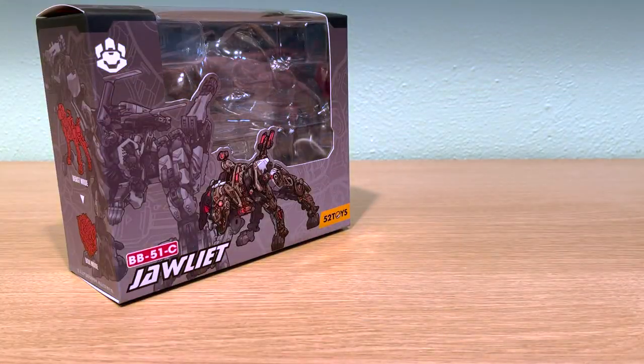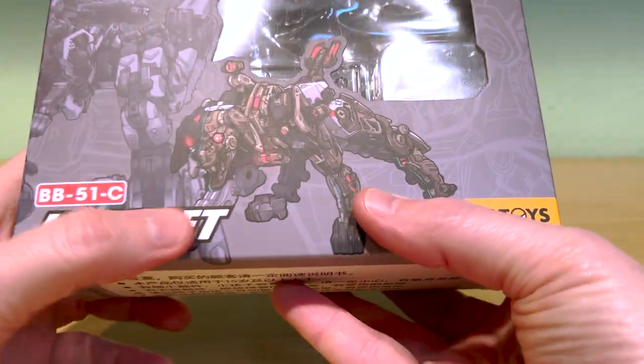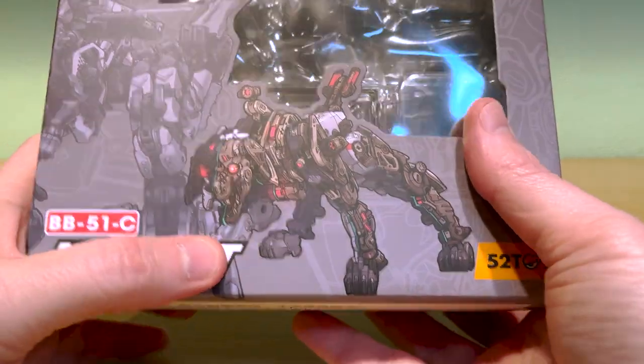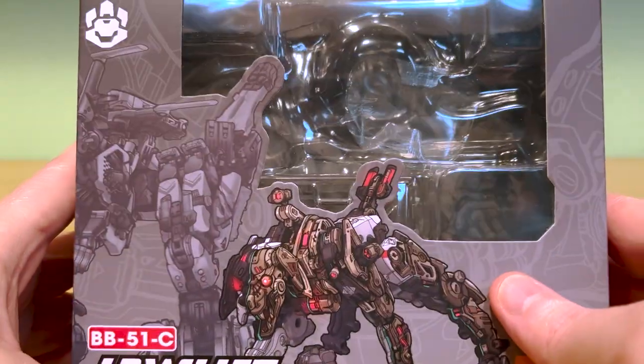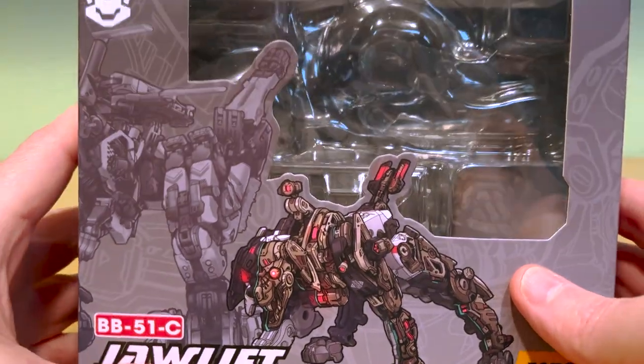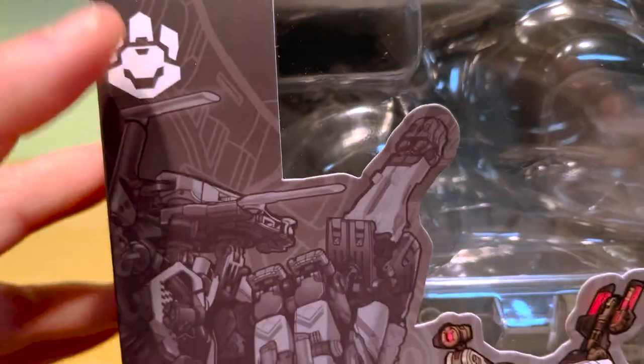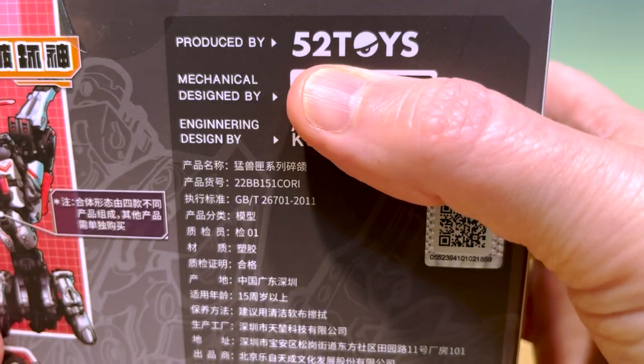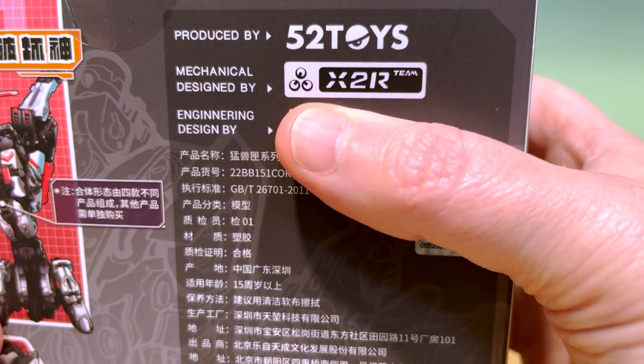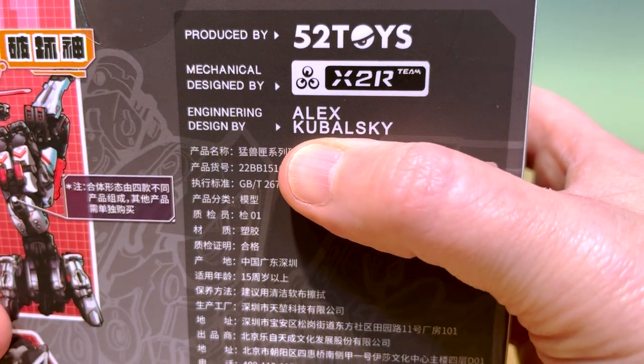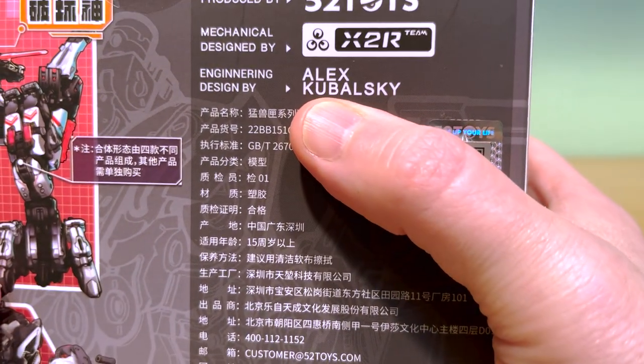The box art is always really nice. The front features a cutaway of the cybernetic internals of the robot, and in this particular case it's absolutely terrifying. This looks like a hellhound to be honest. You've got the beast faction symbol here, produced by 5-2 toys, mechanical design by their in-house geniuses x2r, and engineering design from Alex Kubalski who is a fairly well-known product designer.